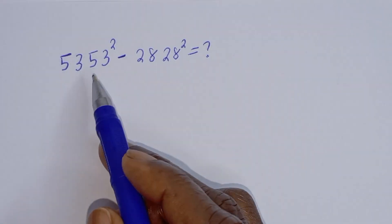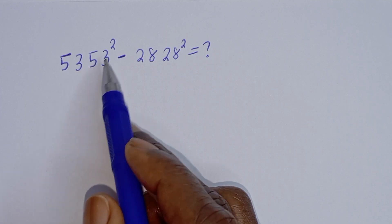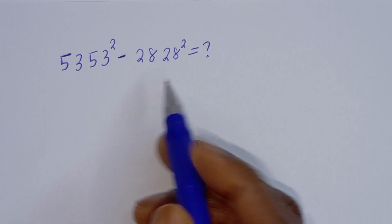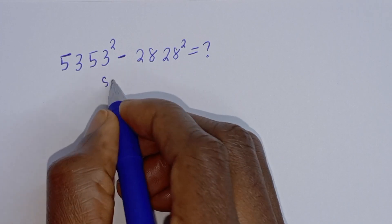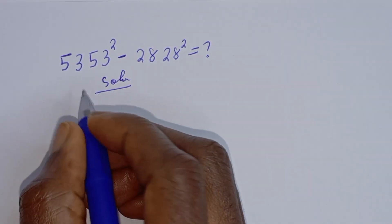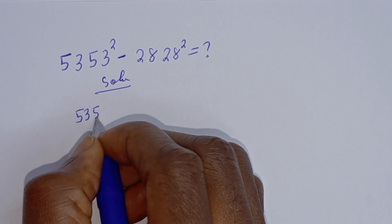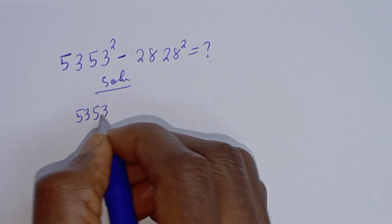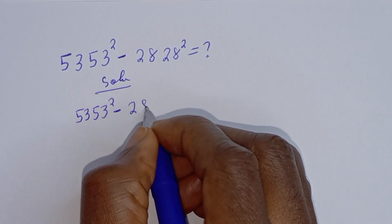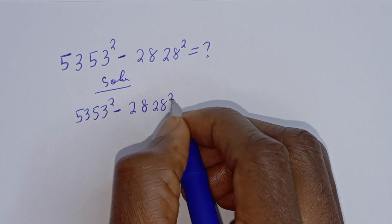Hello. How to simplify this nice math problem? 5050 square minus 2828 square is equal to what? Solution: we have 5050 square minus 2828 square.